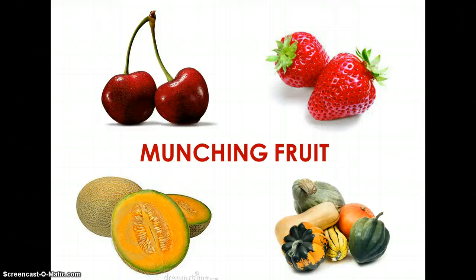Animals also help disperse seeds by eating them. Here we have cherries, strawberries, cantaloupe, and some winter squash. When animals eat these fruits, the seed is not digested as it goes through their digestive tract, so when they go to the bathroom they are effectively planting the seeds of these fruits and planting the next generation of the plant.